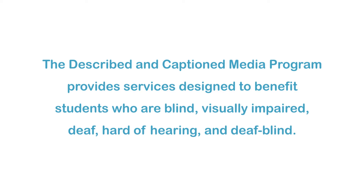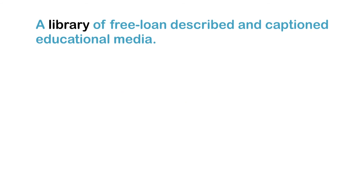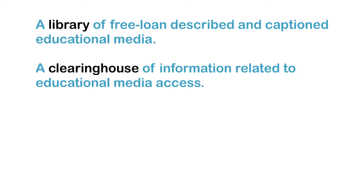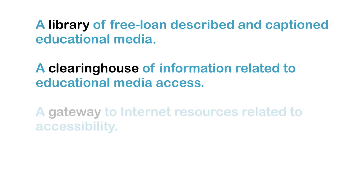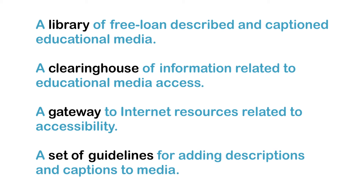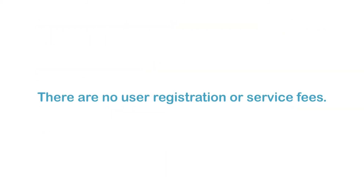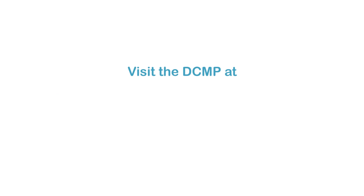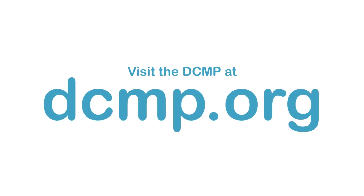The Described in Caption Media Program provides services designed to benefit students who are blind, visually impaired, deaf, hard-of-hearing, and deaf-blind. These services include a library of free loan described and captioned educational media, a clearinghouse of information related to educational media access, a gateway to Internet resources related to accessibility, and a set of guidelines for adding descriptions and captions to media. There are no user registration or service fees. Visit the DCMP at dcmp.org.